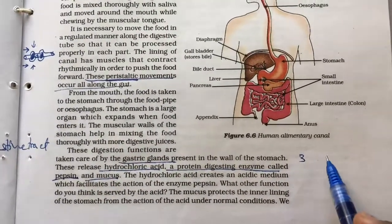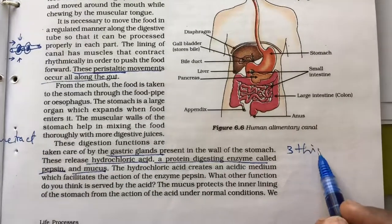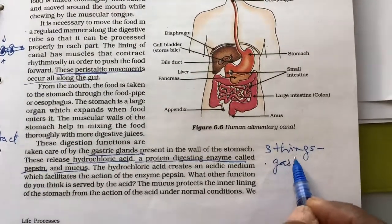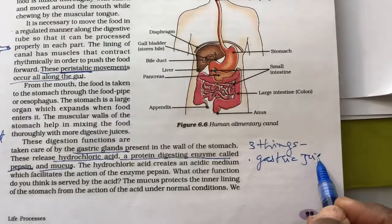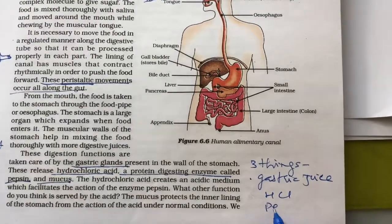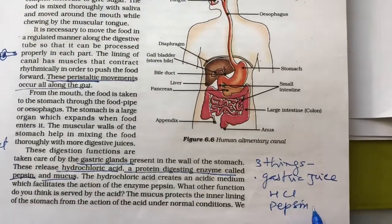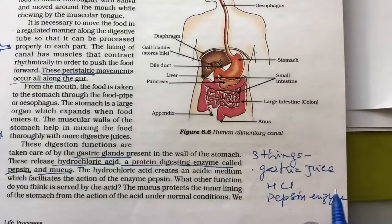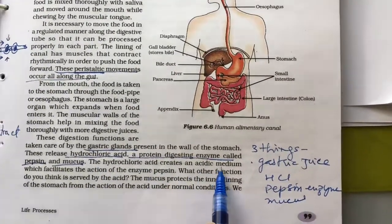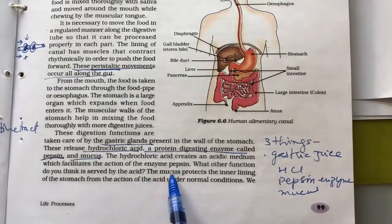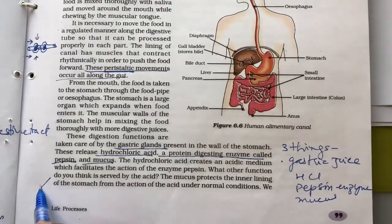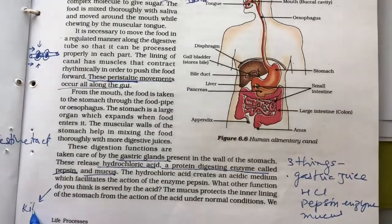So there are three things that are secreted from the gastric lining. The gastric juice contains three things, HCl, pepsin, an enzyme, and mucus. Hydrochloric acid creates an acidic medium which facilitates the action of enzyme pepsin. What other functions do you think is served by the acid? What else it will be doing? It will be killing germs.